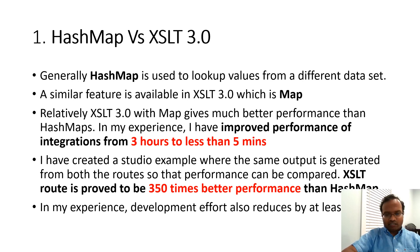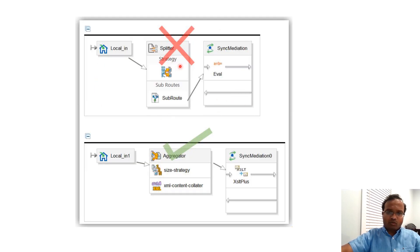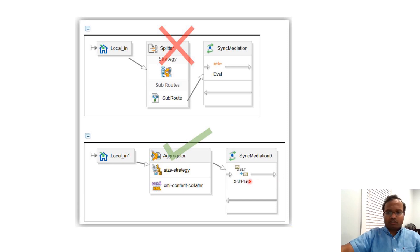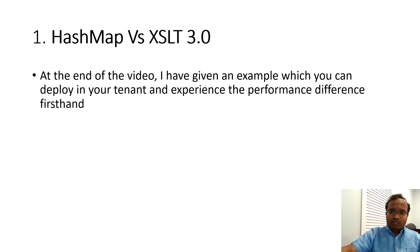In the example provided at the end of this video, you can see performance improved from approximately seven minutes to less than one second — that's 350 times better performance. The suggestion is to avoid using a splitter with HashMap for row-by-row processing. Instead, use an aggregator to merge multiple files and use XSLT 3.0.